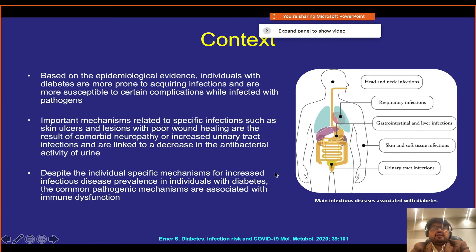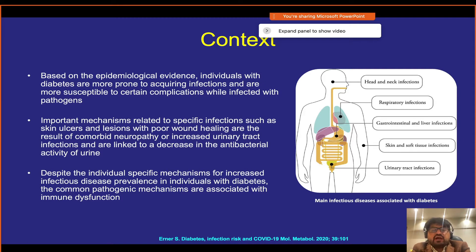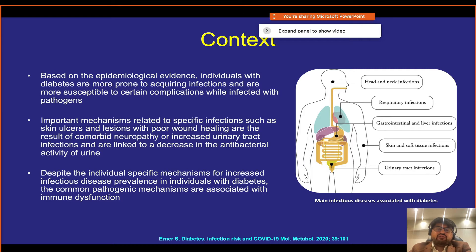Let me build context for this talk. When we treat patients with diabetes, we always tell them to control their blood sugar — because a diabetic patient who develops an infection faces very high risk of complications, from head to toe. There are infections known as diabetes-specific infections, which occur mainly in diabetic patients and are very rare in non-diabetic individuals.